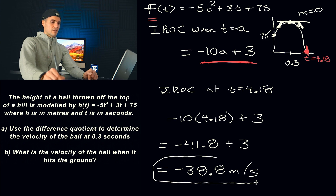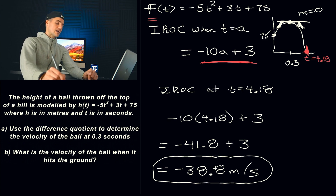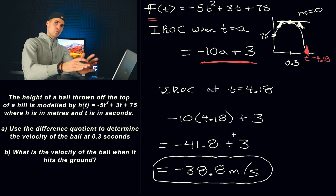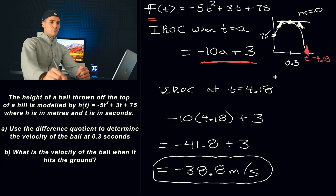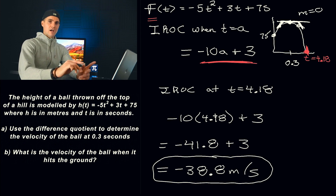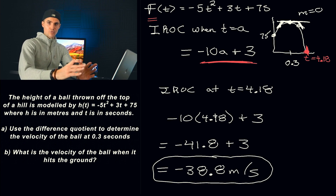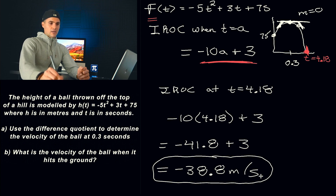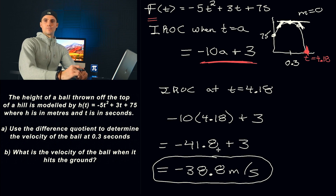That gives us negative 38.8 meters per second — that's the speed at which the ball hits the ground. If you're finding the instantaneous rate of change a different way in your class, like using f(4.18001) minus f(4.18) over 4.18001 minus 4.18, make sure you're getting the same answer or something very close to this.